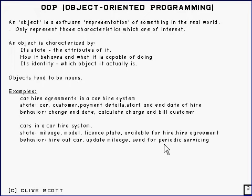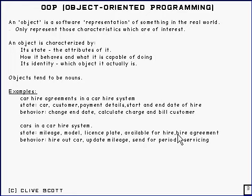And as you can see, this car object might have some sort of entity — a car hire agreement — in it, which is one of the objects mentioned earlier. So you can see there may be a pointer or something between them.